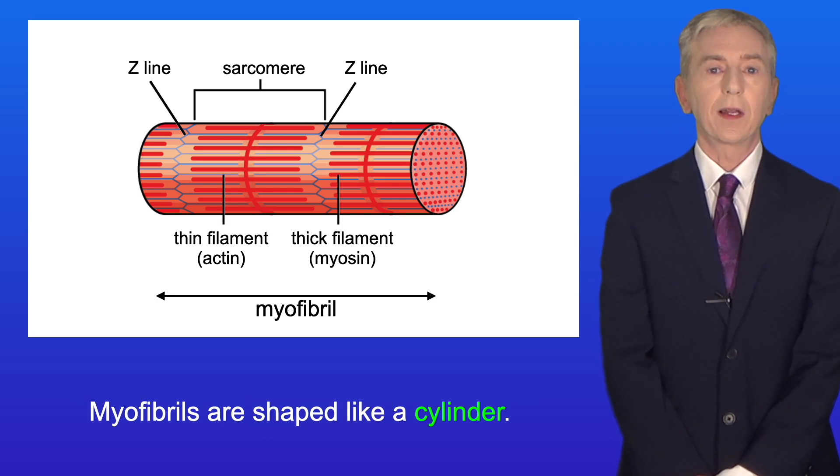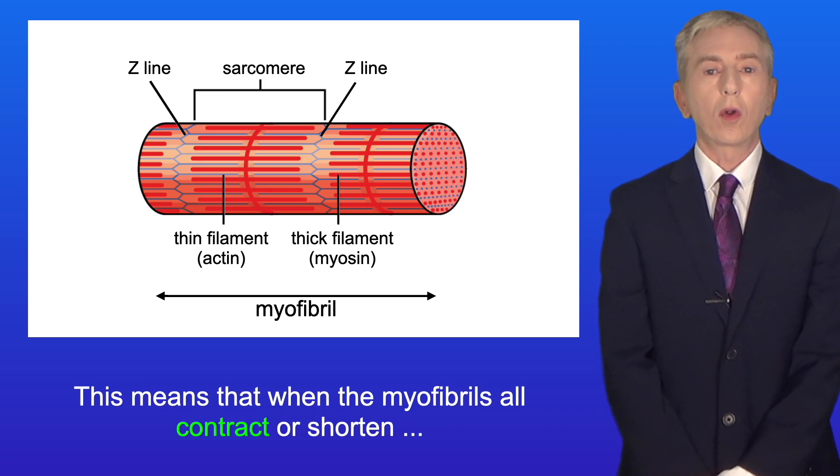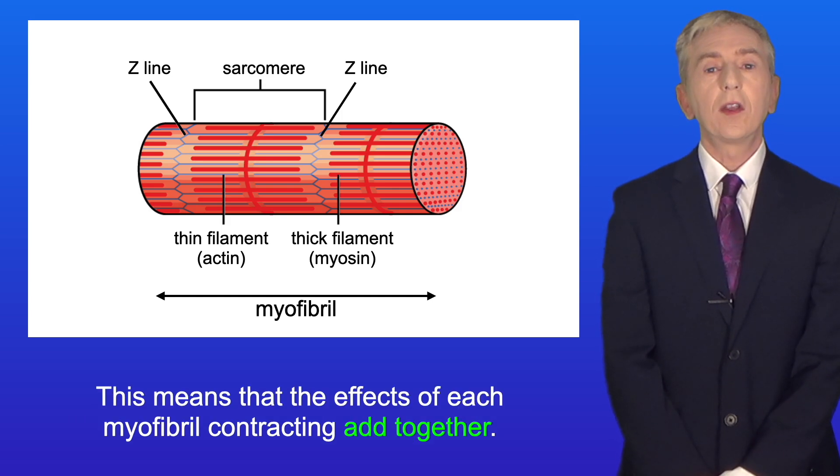Myofibrils are shaped like a cylinder and they're lined up so they're parallel with each other. This means that when the myofibrils all contract or shorten they all contract in the same direction and this means that the effects of each myofibril contracting add together.